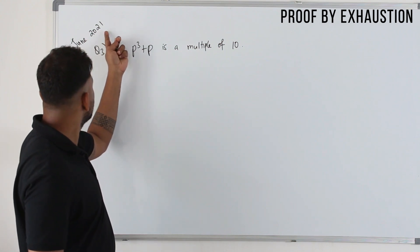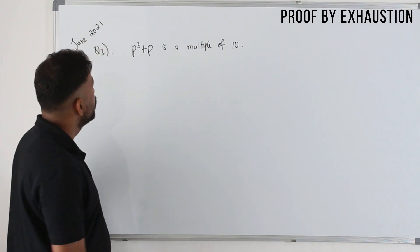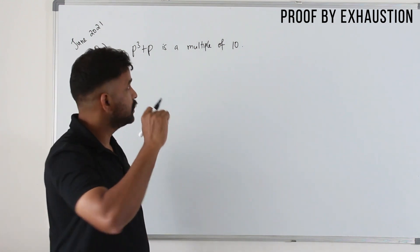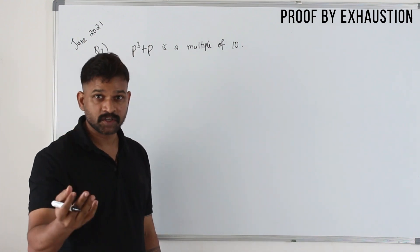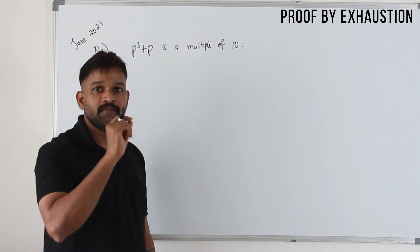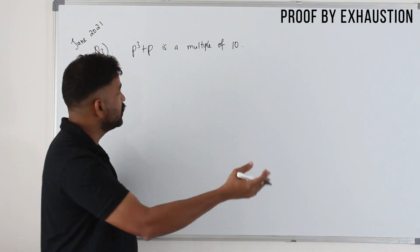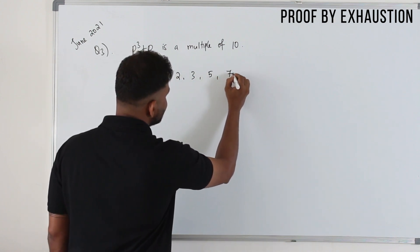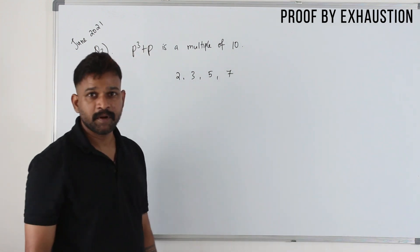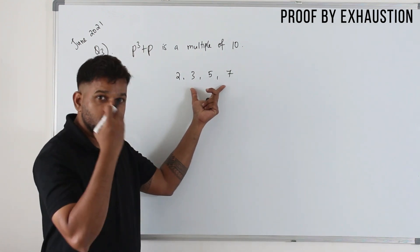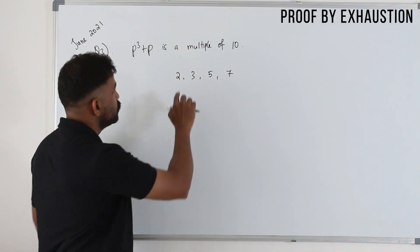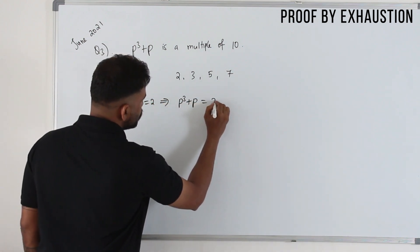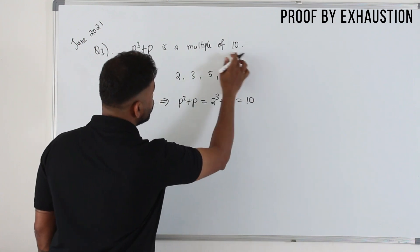Another past paper question is from June 2021, question number 3. We need to prove that p³ + p is a multiple of 10 for all single-digit prime numbers. The question doesn't mention proof by exhaustion explicitly, but it states 'for all single-digit prime numbers.' The single-digit prime numbers are 2, 3, 5, 7. You have a very limited set, so you use proof by exhaustion. When p = 2: p³ + p = 8 + 2 = 10, which is a multiple of 10.